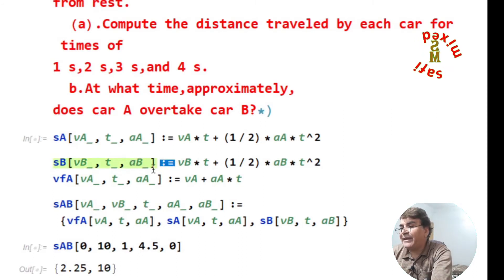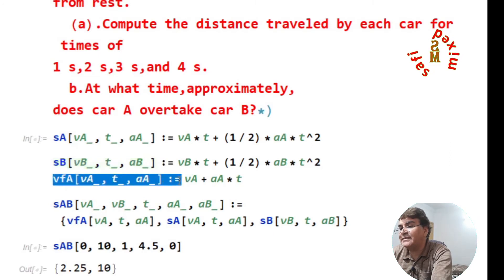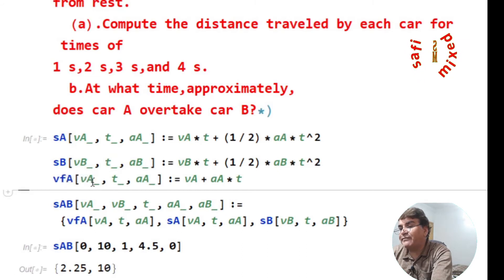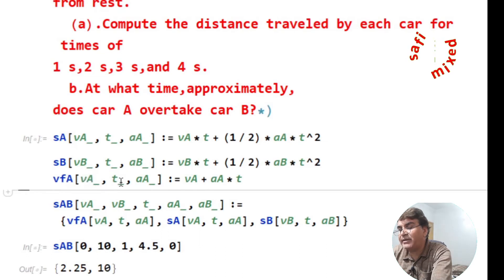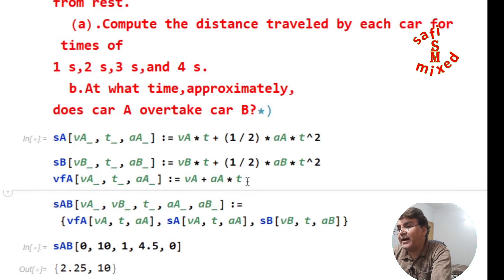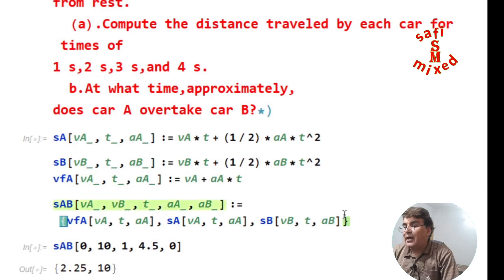I can also find the velocity of car A at any time t by using the second equation of motion and constructing a function for the final velocity. I write the final velocity of car A as a function of its initial velocity vA, time t, and its acceleration aA, which goes as: vfA = vA + aA·t.